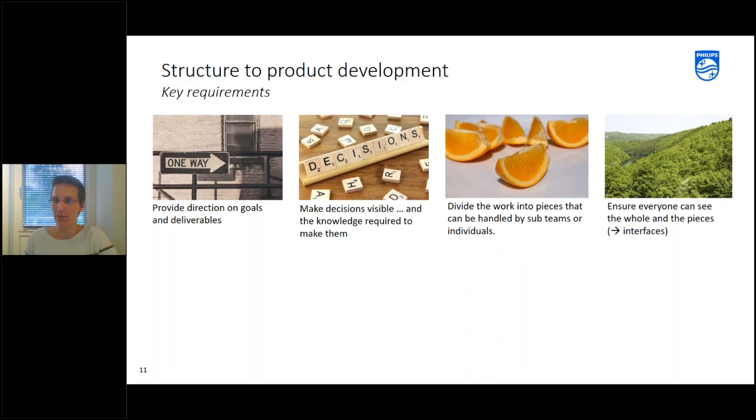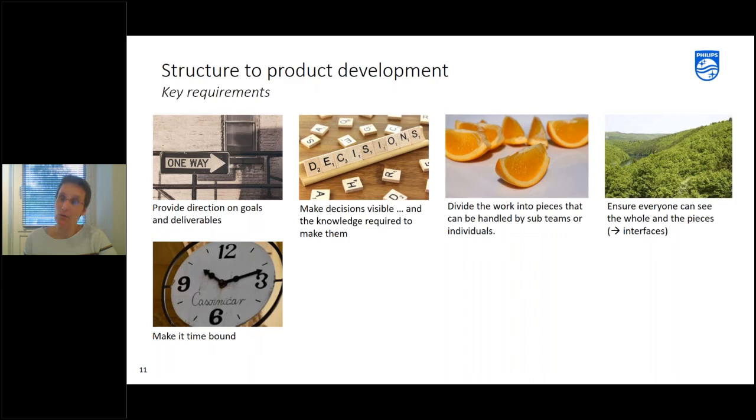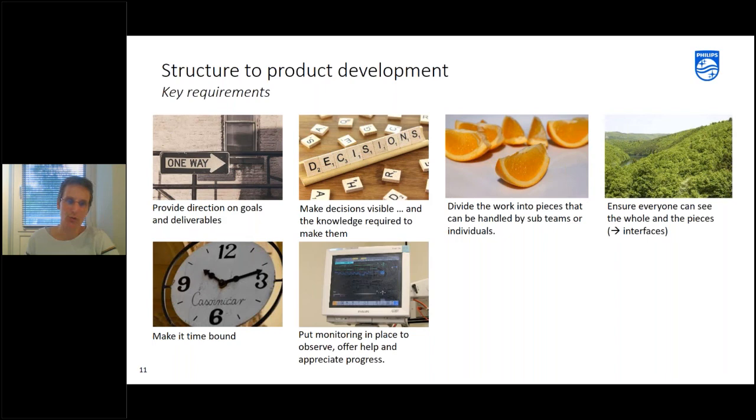Then it's important that you make sure that everyone can see the whole thing, so the whole orange if you want and also all the pieces. So everyone can also see the interfaces between things and that helps them then to find each other. I think this criterion is often forgotten. So the project manager has a clear plan and of course any project manager making a plan has some kind of structure in mind, but sometimes we forget to talk about it and to show the whole to everyone. Then we make it time bound. So we also put some time limits on there. Sometimes you make a time box. So we say, let's learn for three weeks and see how much we can learn in that period and then let's repeat that cycle. Sometimes we say, I would like you to finish this work package within six weeks or something like that. Then what we also need to do in our structure is to put monitoring in place so that we can observe the progress. We can offer help but we can also appreciate the progress.